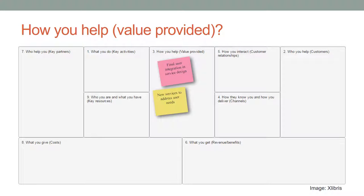At the Value Provided segment, describe the specific benefits users will get from this service. Try to answer the following questions: Which needs will this service satisfy? Does it increase convenience or usability? Does it improve service quality and performance? Does it increase user satisfaction? Within the ExLibris example, integrating end users in service design and creating services which address their needs and desires are the values provided.